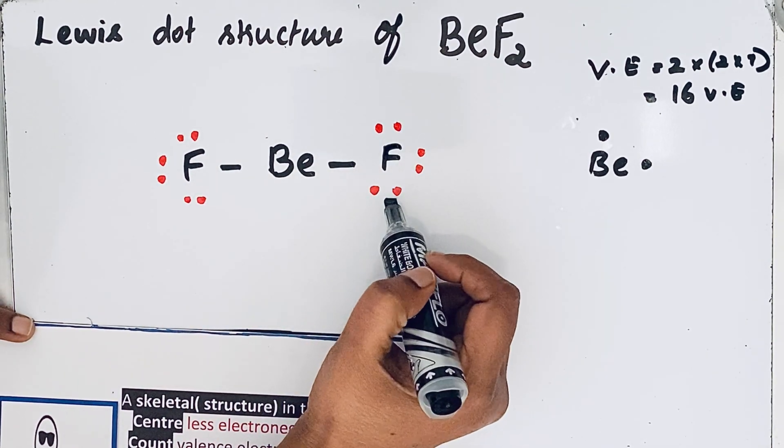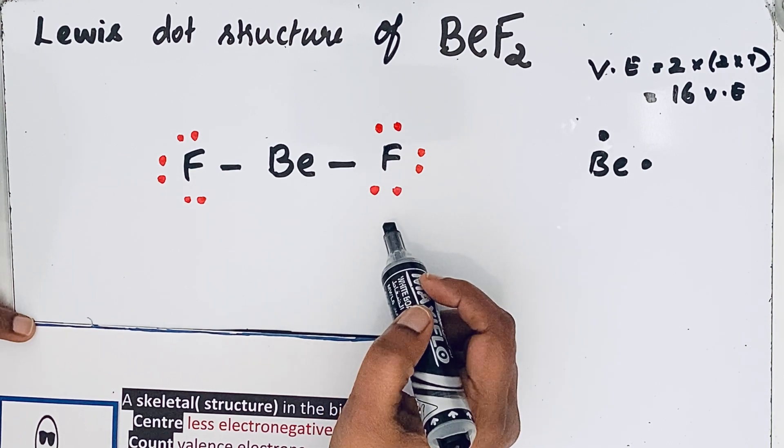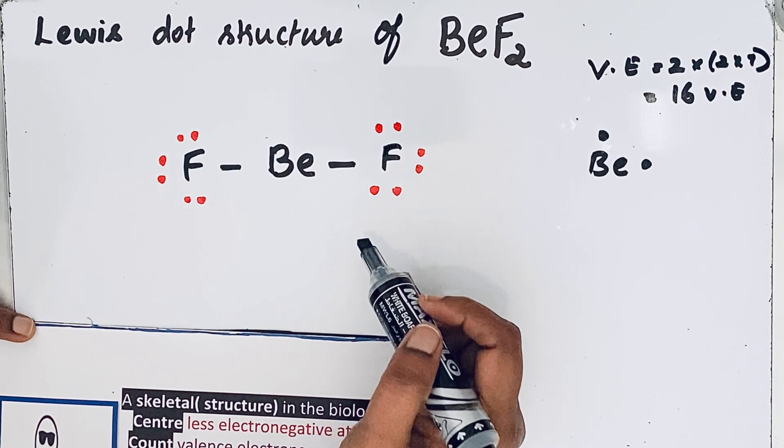16 valence electrons are present in this Lewis dot structure. This Lewis dot structure of BeF2, beryllium fluoride, is absolutely right.